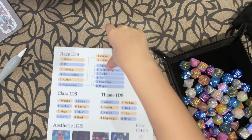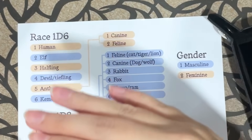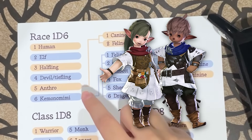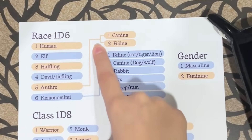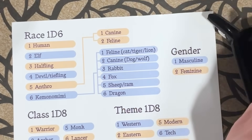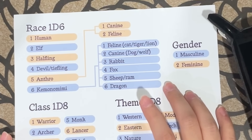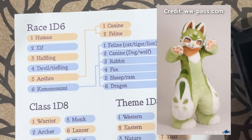So let's take a look at what I have. For the race, I've got human, elf, halfling — or like any small type of race. I actually had Lalafell in there but I took it out. Next is devil or tiefling. Anthro splits out into two: canine or feline, which is basically furries, but I really want to try drawing the Japanese type of furries called Kemono — I just really like that stylization more.